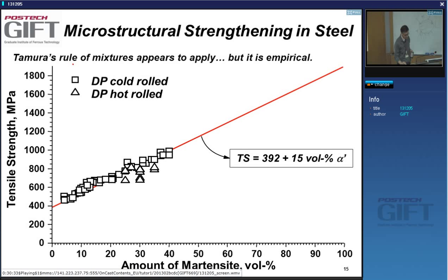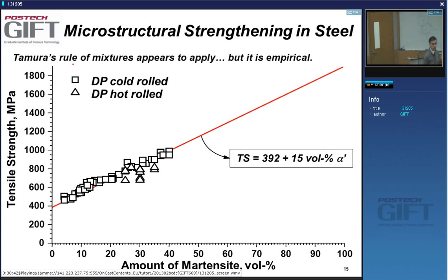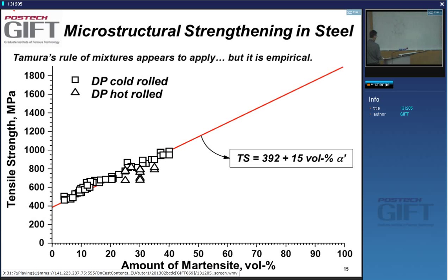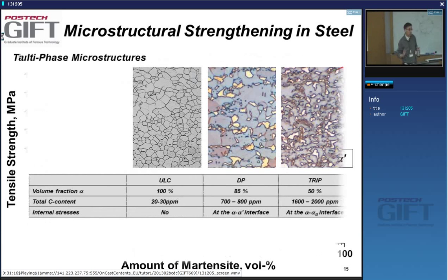Using this rule of mixture will get you far in practice. For instance, here are experimental measurements for dual phase steel in cold-roll and hot-roll grades — tensile strength as a function of volume percentage of martensite. You can see it's a nice linear relation. If you have no better theory available, you can always use the rule of mixture. It's an empirical law that can help you do some modeling.